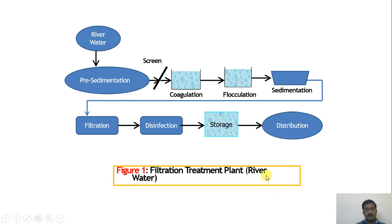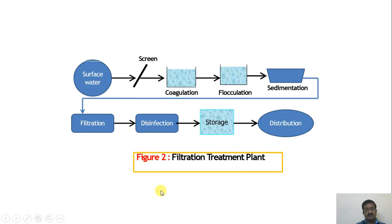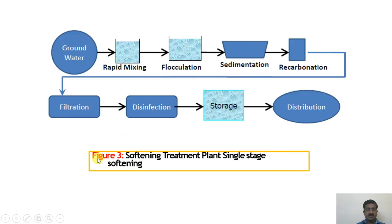Depending on the water source adopted, there may be changes in the flow diagram. For surface water, the sequence is: screening, coagulation, flocculation, sedimentation, filtration, disinfection, storage, and distribution — the same standard process. For a softening treatment plant with a groundwater source, the sequence includes rapid mixing, flocculation, sedimentation, and recarbonation before filtration, to address hardness or high TDS in groundwater.